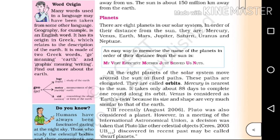This is why Venus is considered as Earth's twin — because its size and shape are very much similar to that of the Earth.